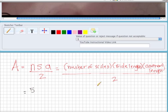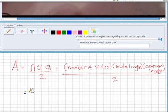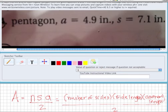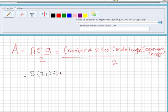n is five for a pentagon. The length of our side is 7.1, and the length of our apothem is 4.9, and we're going to divide that all by two. And of course, we need a calculator for this question. So if you plug this into your calculator,